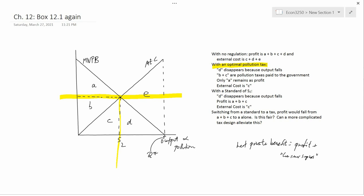I want to find out what remains of profit. Profit used to be a plus b plus c plus d. Well now, d disappears because output falls. So you don't have d anymore as part of profit because output has shrunk to s2.